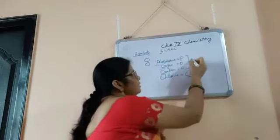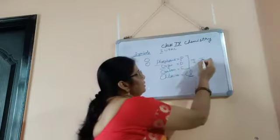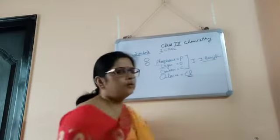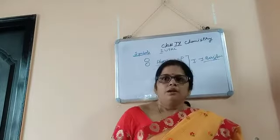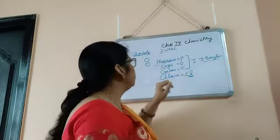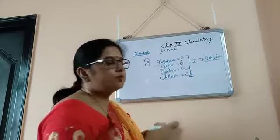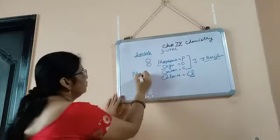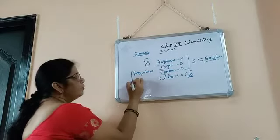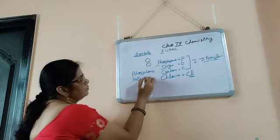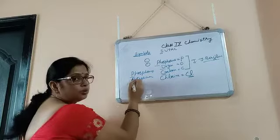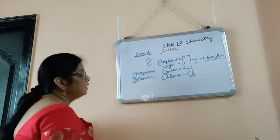This theory was given by J.J. Berzelius from Sweden. Now, there was some inconvenience — for example, both phosphorus and potassium start with P, so they both cannot be called P.